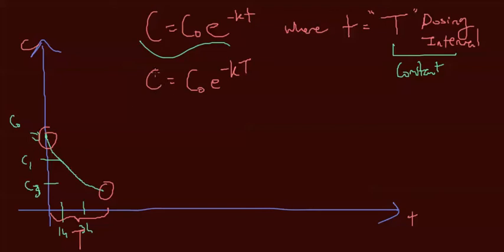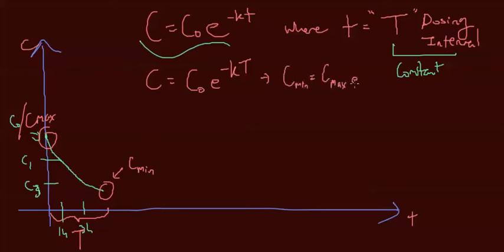With that rewrite, the C at the end of the interval becomes your minimum concentration — C min — and the original C0 becomes C max. So the key equation is: C min = C max * e^(-KT). This is really important — if you take anything away from this video, take this equation.